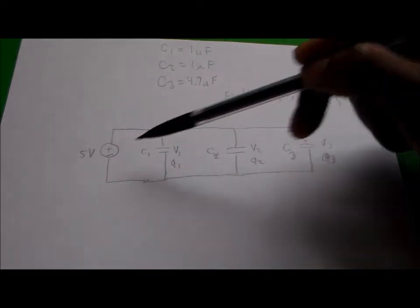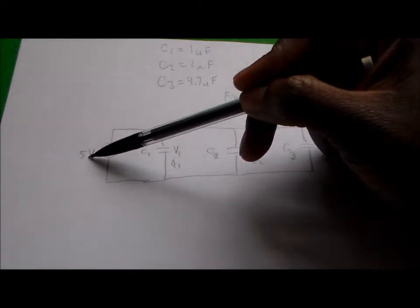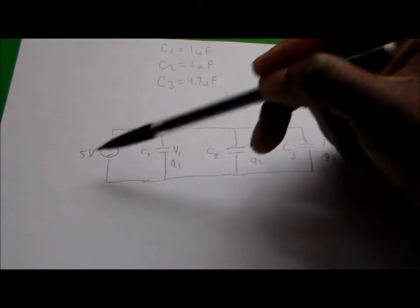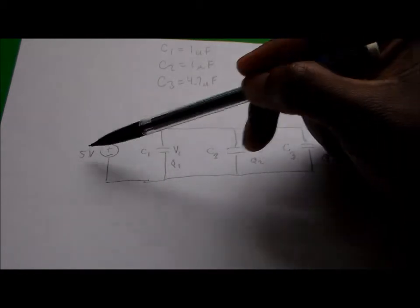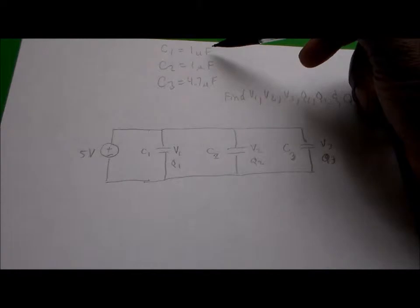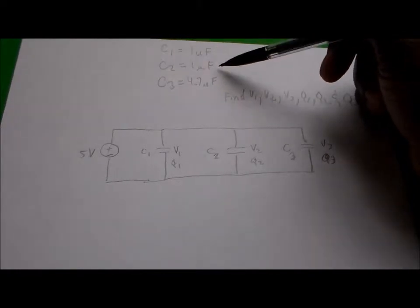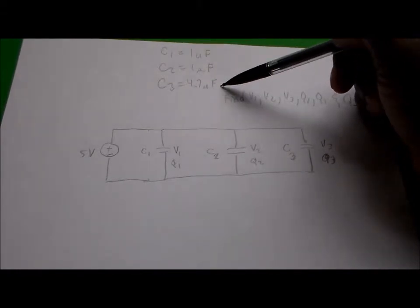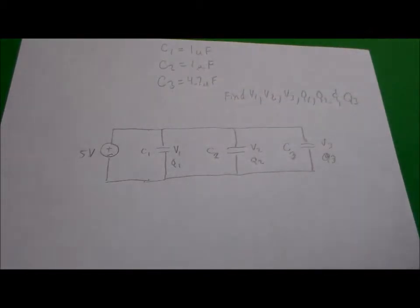All three of those capacitors are in parallel with the 5-volt voltage source. The capacitor values are one microfarad, one microfarad, and 4.7 microfarad for capacitor number three.